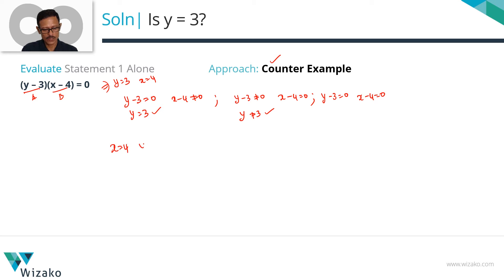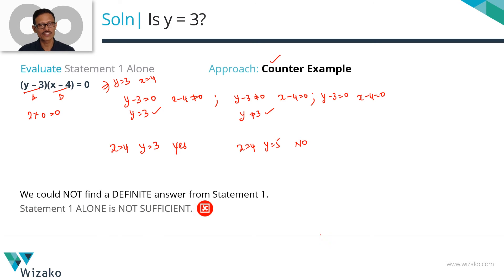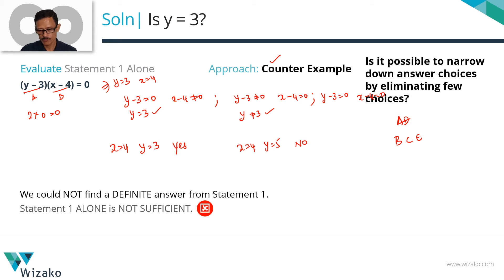An alternative way to approach the same thing is with a counter example. Let's take x to be equal to 4 and y to be equal to 3. In this case, is the product equal to 0? Yes. And what is the answer to the question? y equals 3. Let's look at one more case: x equals 4, y equals 5. Will this equation hold good? 5-3 is 2 into 4-4 is 0, which is equal to 0. So the statement holds good for x equals 4 and y equals 5. Is y a 3 in this case? y is not a 3. So sometimes yes, sometimes no. The second way to approach the same statement. So net-net statement 1 has not given us a conclusive answer. Statement 1 alone is not sufficient.